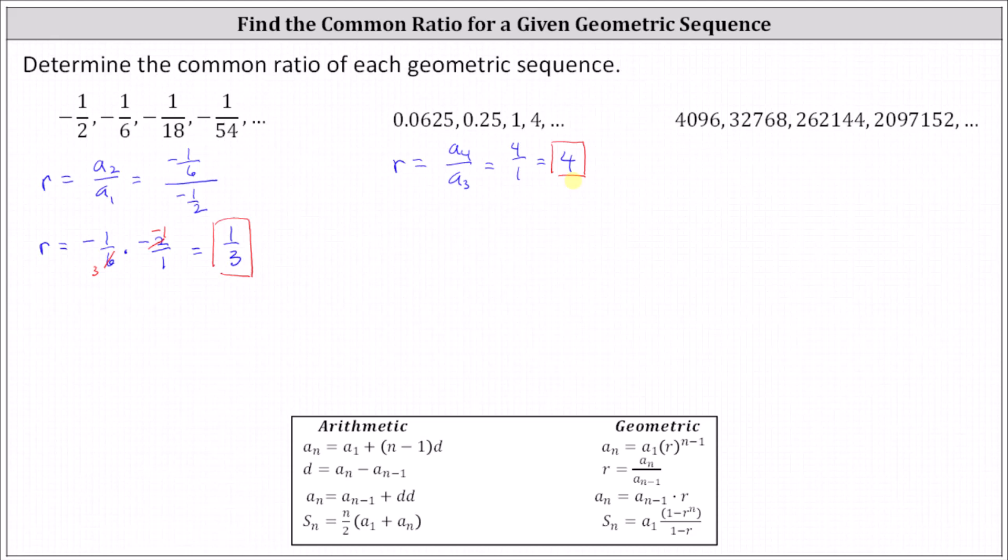Notice if we used a sub one and a sub two, we'd have to divide 0.25 by 0.0625 to determine the common ratio r. If we're using a calculator, probably not a problem, but it's much easier to use a sub four divided by a sub three to determine r.